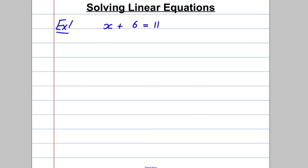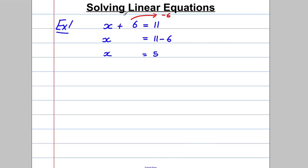We could guess X, or what I prefer is to subtract 6 from both sides. Some students like thinking of the positive 6 going over here and becoming a negative 6. So X is left here. We would have 11 subtract 6. X equals 5. Check: 5 add 6 is 11. We've got it.